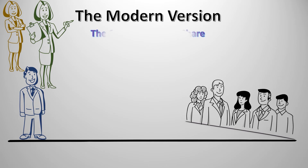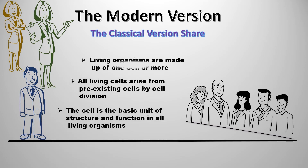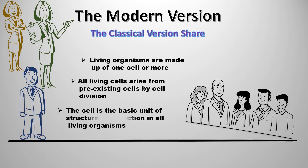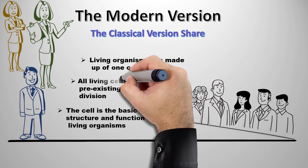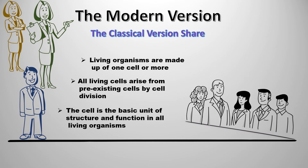The three postulates of the classical version are the beginning of the rise of the modern version of the cell theory. They state that: living organisms are made up of one or more cells; all living cells arise from pre-existing cells by cell division; and the cell is the basic unit of structure and function in all living organisms. Since the rise of the classical theory, microscope technology has improved, allowing for more detailed observations that have led to new discoveries about cells.